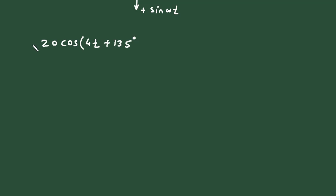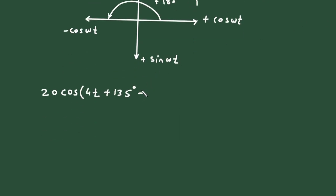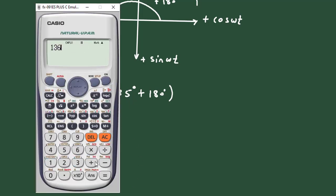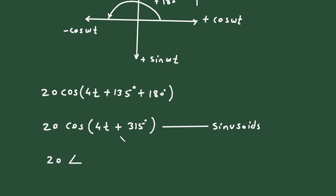We changed the sign from minus to plus, so we add 180°. This gives 20·cos(4t + 135° + 180°), which is 20·cos(4t + 315°). This is now the standard sinusoidal form.